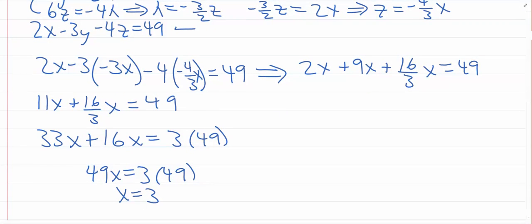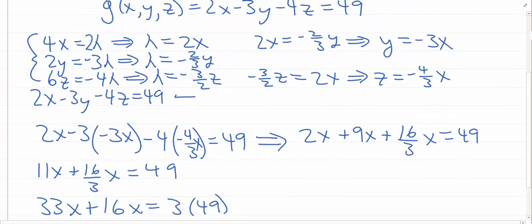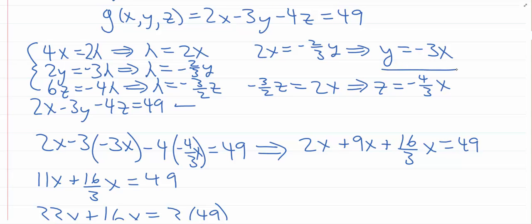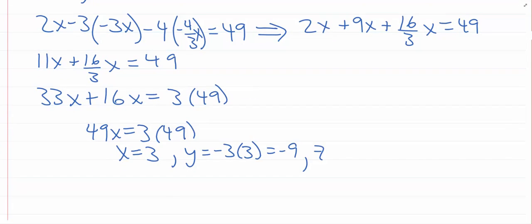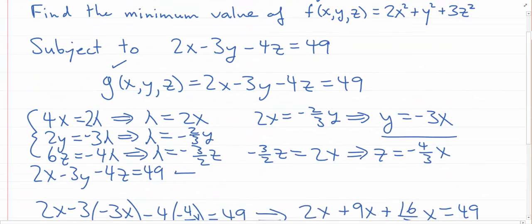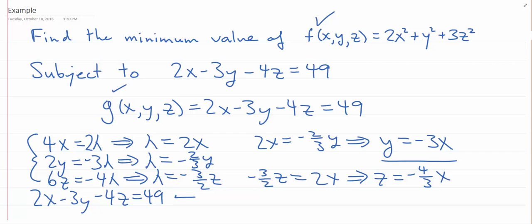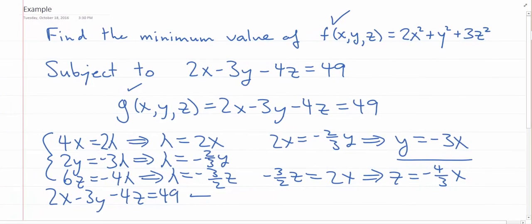So X equals 3. And Y equals negative 3X, so Y equals negative 9. And Z equals negative 4/3 times 3, which is negative 4. So it looks like our minimum occurs when X equals 3, Y equals negative 9, and Z equals negative 4. We could go back and plug those values into the original function to find the minimum value.